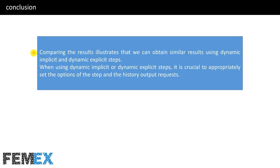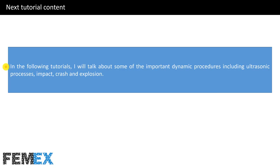Now I want to talk about the conclusions. Comparing the results illustrates that we can obtain similar results using dynamic implicit and dynamic explicit steps. When using either step, it is crucial to appropriately set the options of the step and the history output requests. In the following tutorials, I will talk about some important dynamic procedures including ultrasonic processes, impact, crash, and explosion.